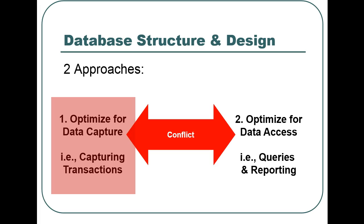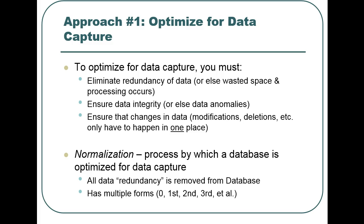We will now discuss the first database design: capturing transactions. To optimize a database for capturing transactions, you must eliminate all redundant data. Redundant data wastes space and can cause data integrity issues. Ideally, every piece of data should be stored in only one place, so any deletions or modifications only have to be made once. The process of removing redundancy from a database is called normalization.